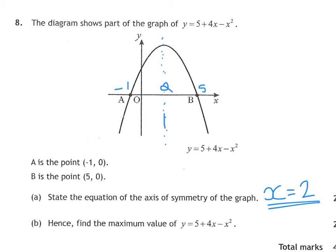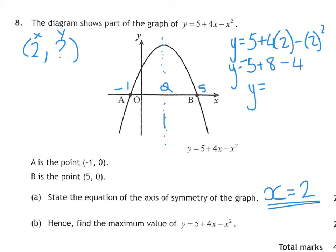Then it says find the maximum value of the trinomial. It's a fancy way of asking you for the turning point. The coordinate of this turning point is 2 something. We know what the x-coordinate is. We need to get the y-coordinate. I'm going to replace x with the number 2. So I've got y equals 5 plus 4 times 2 take away 2 squared, which is 5 plus 8 take away 4. 13 take away 4 is 9. So the maximum value, if they asked you for the turning point, you would say it was 2 and 9. But because it just asked for the maximum value, the maximum value is 9. In terms of if this was throwing something in the air, the highest it would reach would be 9 meters or whatever. So just watch the wording.